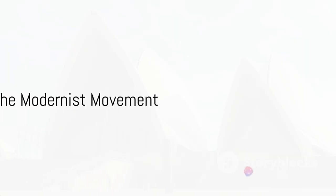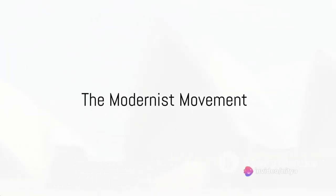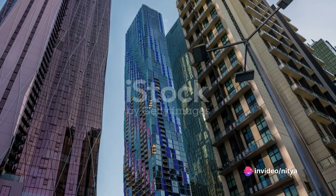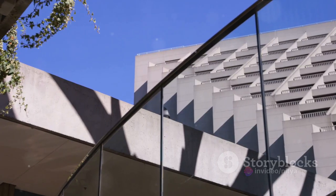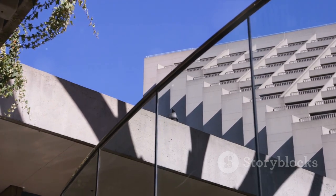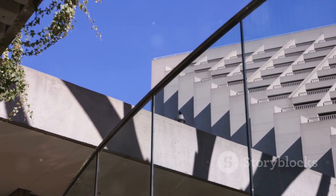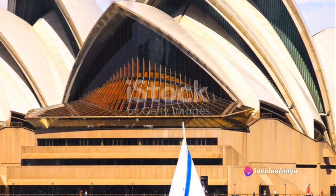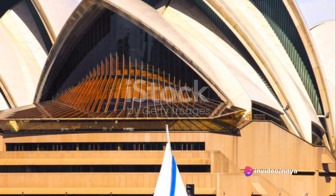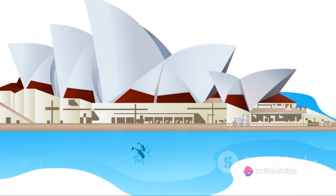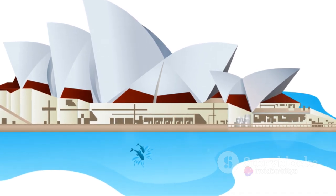With the advent of the modernist movement in the mid-20th century, Australia saw a surge in innovative and experimental designs. Architects started to play with form and function, eschewing traditional design elements for bold geometric shapes and open-plan living spaces. The Sydney Opera House, designed by Jorn Utzon and completed in 1973, stands as a testament to this era's daring vision.